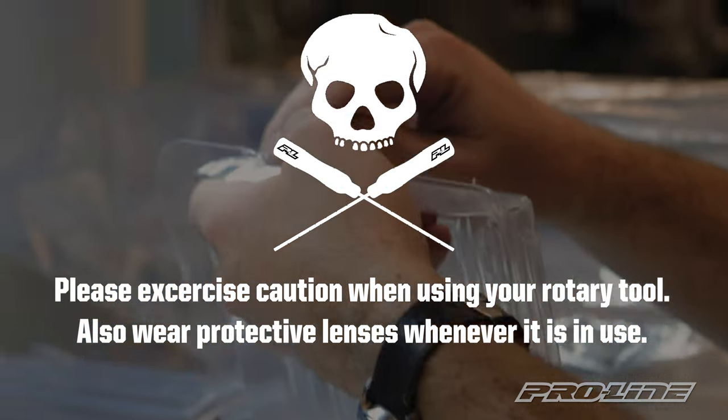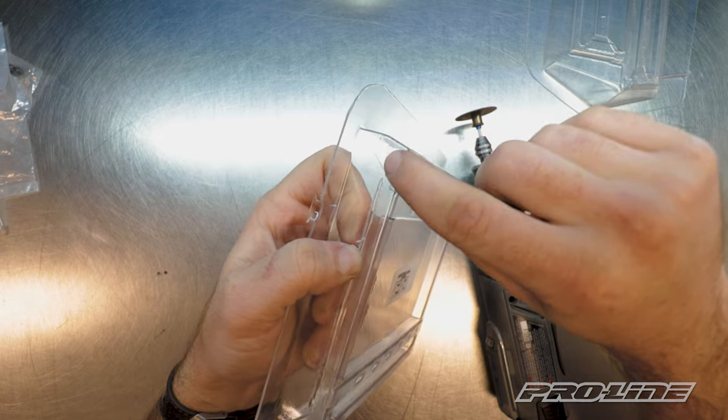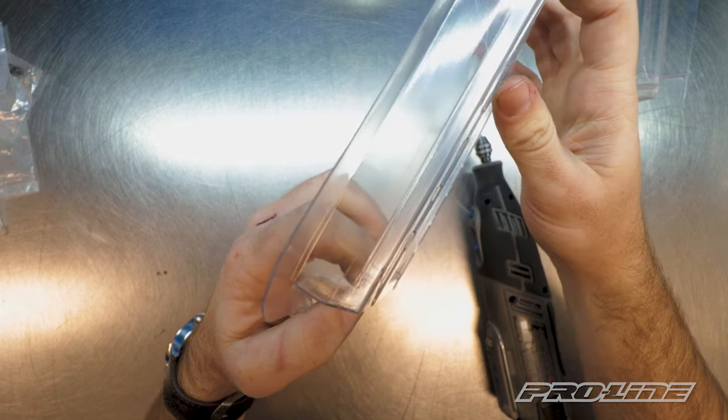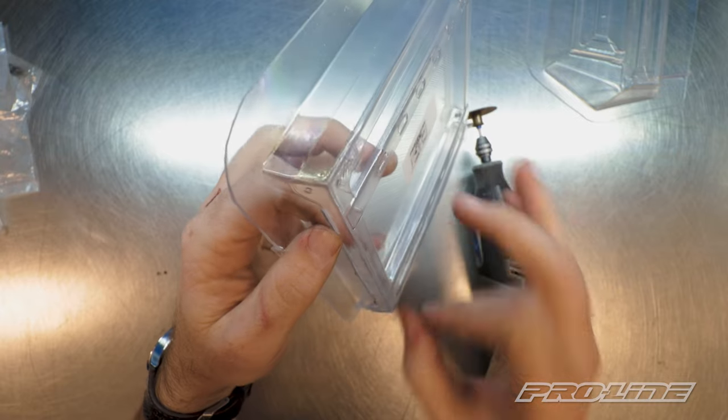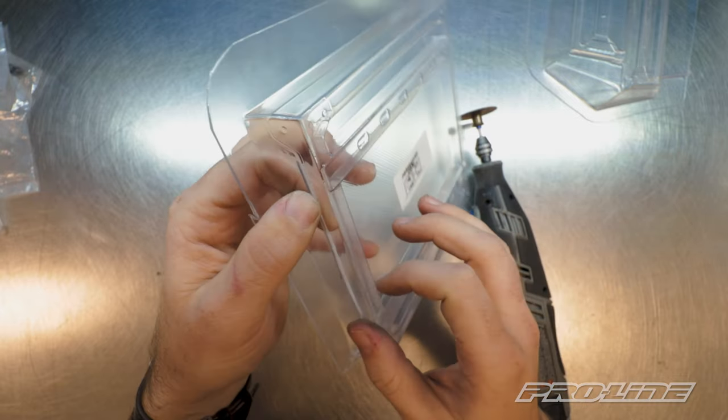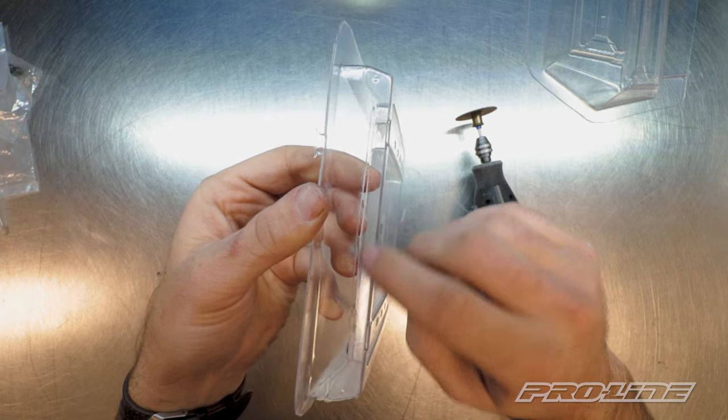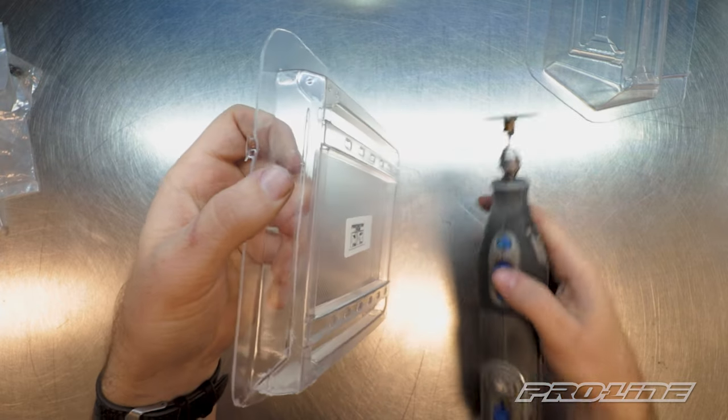And then while we're cutting this out, we're going slightly offset of the scribe line because we don't want to cut too close. In case we slip, we don't want to nick it and mess up the final product. Then we'll go back and clean this up with a rotary drum a little bit later.